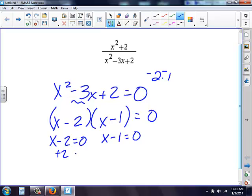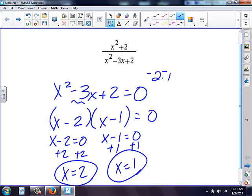We add two to both sides here, we get x equals two. We add one to both sides here, therefore we also get x equals one. So two values that make this problem undefined is two and one.